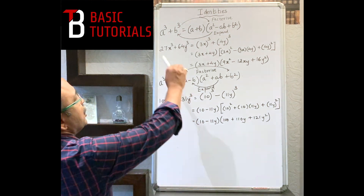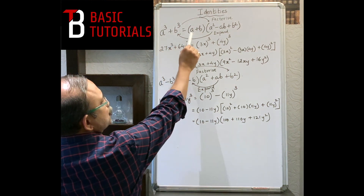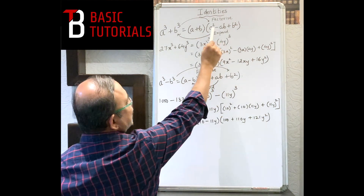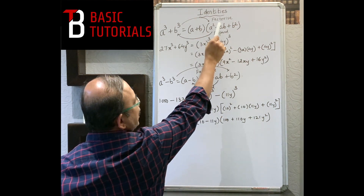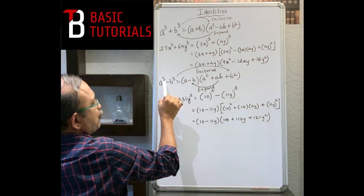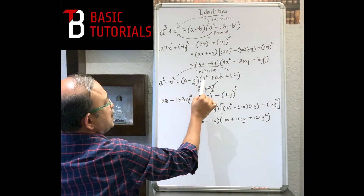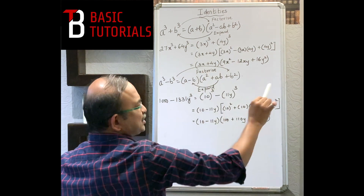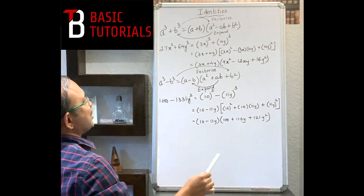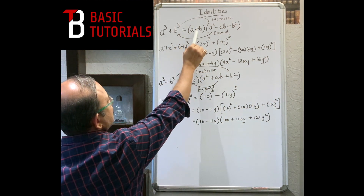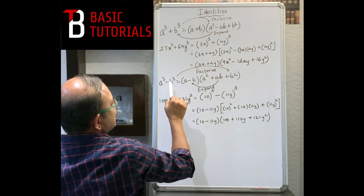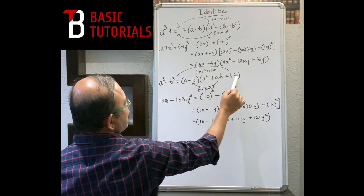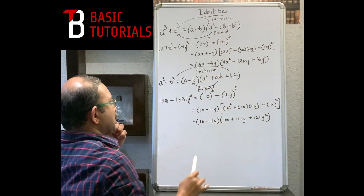Next identity: a³ + b³ = (a+b)(a² - ab + b²). Note it's -ab, not -2ab — some students make that mistake. Similarly, a³ - b³ = (a-b)(a² + ab + b²). The difference is: for a³+b³ we have (a+b) and the middle term is -ab; for a³-b³ we have (a-b) and the middle term is +ab.